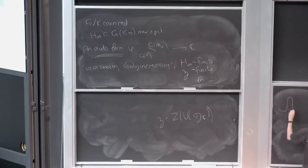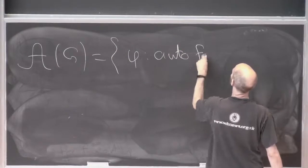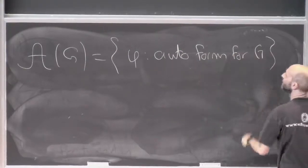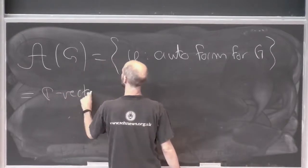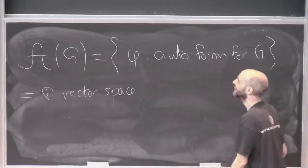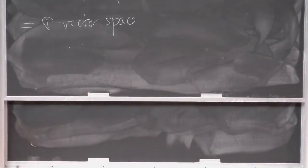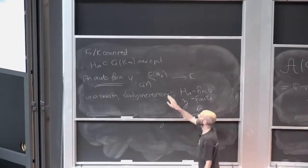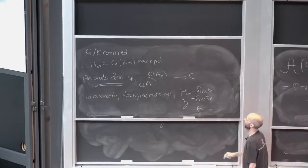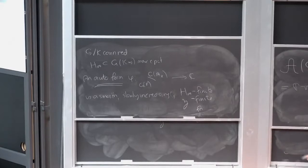Now we look at the space of all of them: A(G), the set of φ which are automorphic forms for G. This is typically a hugely infinite-dimensional complex vector space. It has an action—remember, we really mustn't consider all functions on G(A_K), because that would be like all functions on some finite group G giving you all representations of G. We're definitely not allowed all representations of G(A_K). So we've got these mysterious functions with the G(K)-invariance property, but all of G(A_K) still acts.